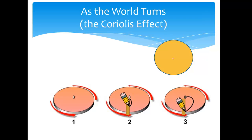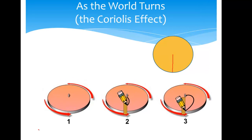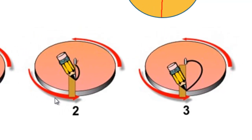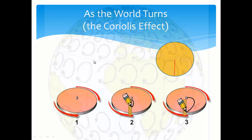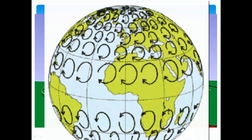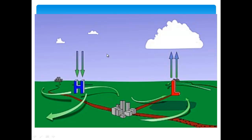If you were to draw a straight line on a circle while it's not turning, the line appears straight. But if you were to draw a straight line from the center to the edge of the circle while the circle was turning, the line would appear to curve, because the surface was moving when the line was being drawn. Likewise, the surface of the earth is always moving. Because of the earth being a globe, the area nearest the equator is moving faster than the area near the poles.